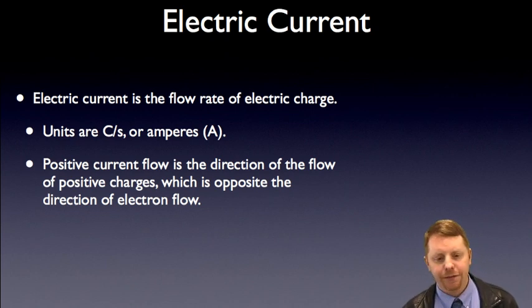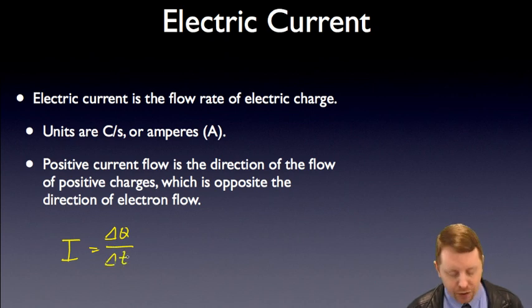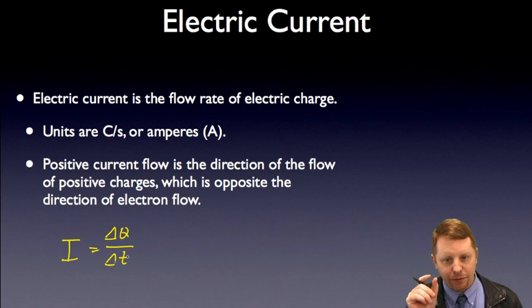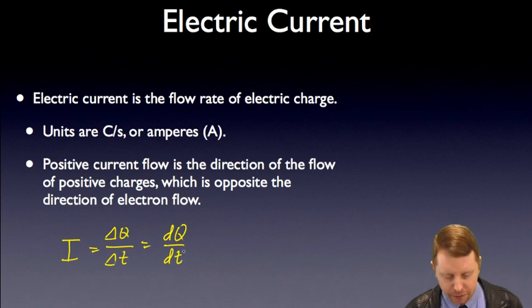If we wanted to define electric current mathematically, electric current, capital I, is the change in charge over time. Or if we want the instantaneous current, as we make that time interval smaller and smaller, that's going to be the derivative of charge through an area with respect to time, dq/dt.